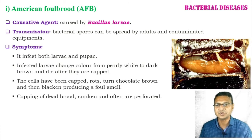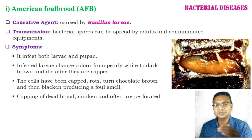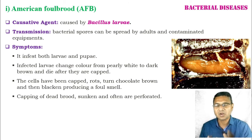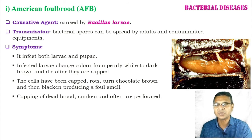Moving to the symptoms: AFB infects both larvae and pupal stages. The infected larvae change color from pearly white to dark brown and die after they are capped, when they move toward the pupal stage. The nurse bees seal that cell with beeswax, and the infected larva dies inside. The capped cells rot and turn chocolate brown, then blacken and produce a foul smell. The capping of the dead brood becomes sunken and is often perforated — that is, small holes are present on the capping surface.